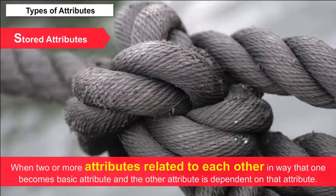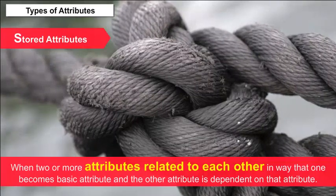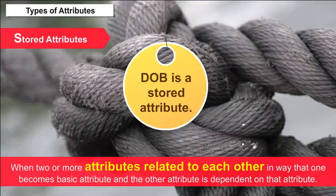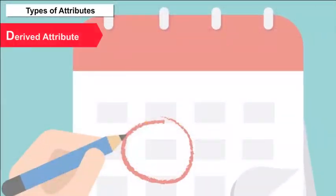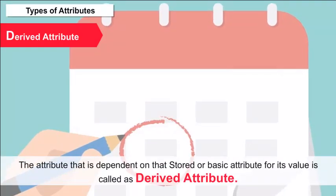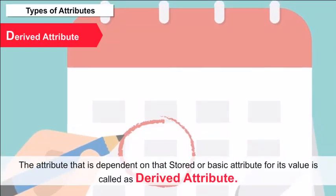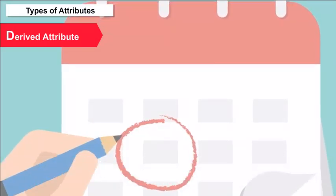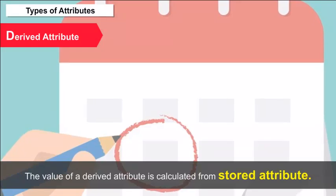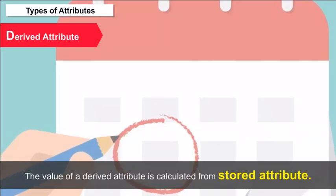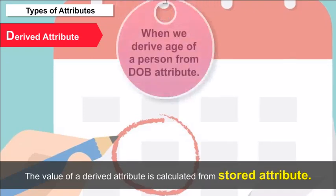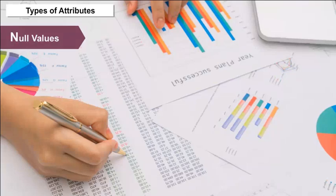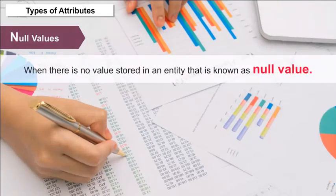Stored Attributes — when two or more attributes are related to each other such that one becomes the basic attribute and the other is dependent on it. For example, date of birth (DOB) is a stored attribute. Derived Attribute — the attribute that is dependent on that stored or basic attribute for its value is called a derived attribute. The value of a derived attribute is calculated from the stored attribute. For example, deriving the age of a person from the DOB attribute.